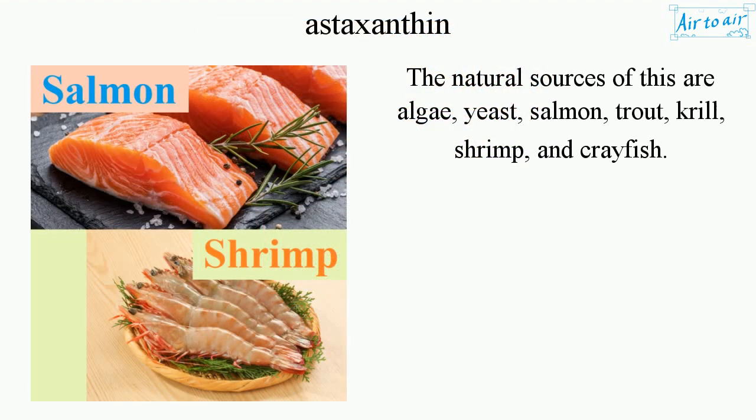The natural sources of astaxanthin are algae, yeast, salmon, trout, krill, shrimp, and crayfish.